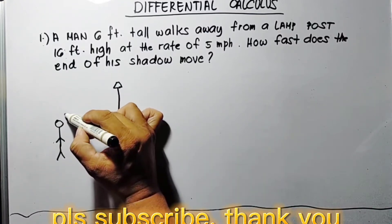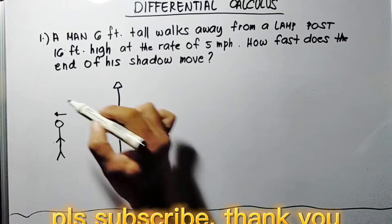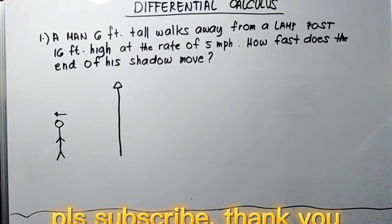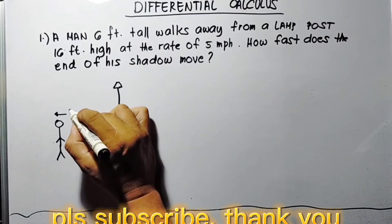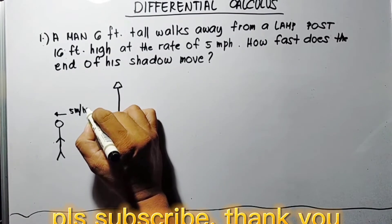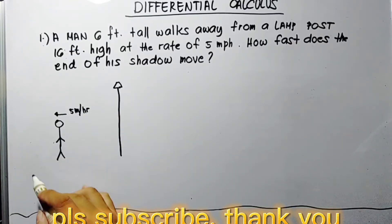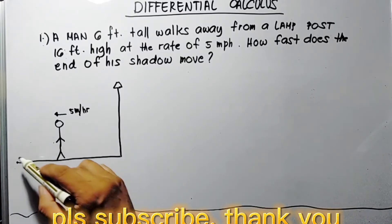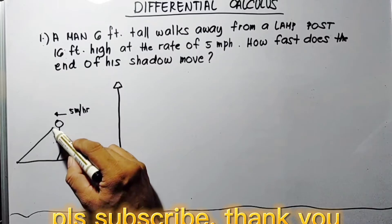Walking away at a rate of five miles per hour. So we draw a line here, the shadow is here. We draw a line and then form our right triangle.